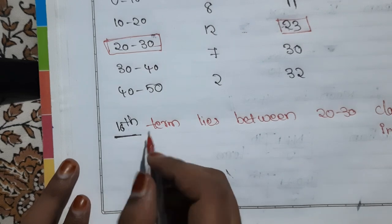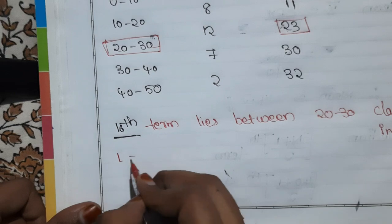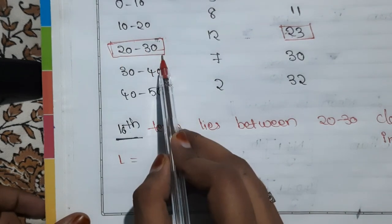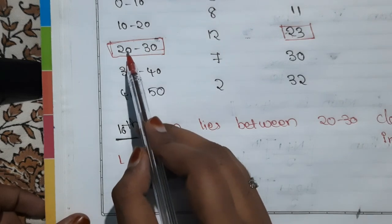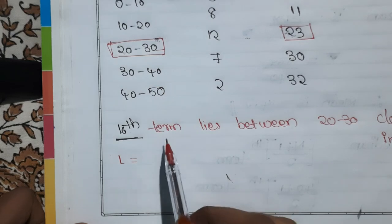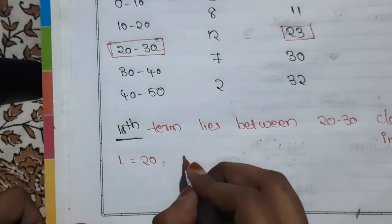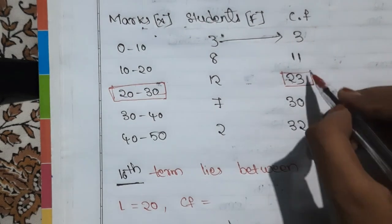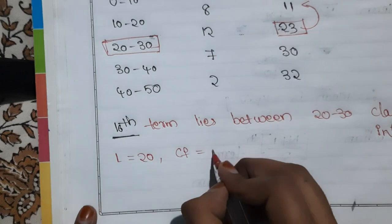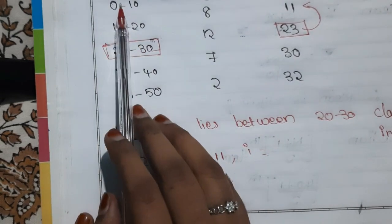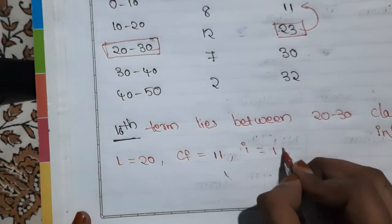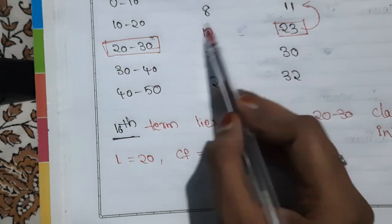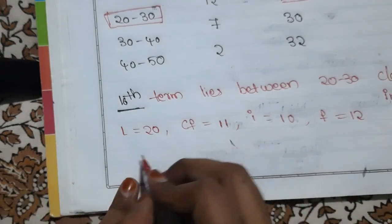Now let us identify the values needed for the median formula. l is the lower boundary of the median class, which is 20. The cumulative frequency before the median class (CF of the preceding class) is 11. The interval i is the class width, which is 10. The frequency f of the median class 20–30 is 12.